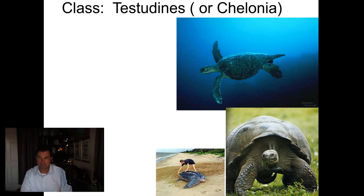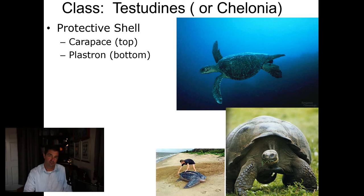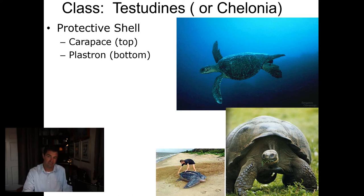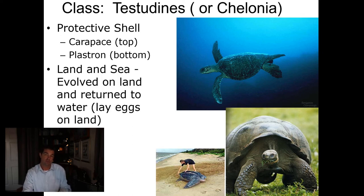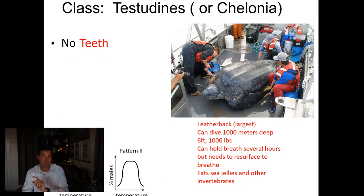Our first group in the reptiles is the group Testudenes or Chelonia. These are, of course, the turtles and tortoises, and they have a protective shell. The top of the shell is called a carapace; the bottom is called the plastron. They originally evolved on land and returned to water later on evolutionarily. Certain turtles evolved to be more marine and moved back into the ocean.